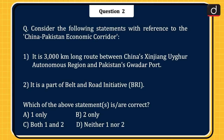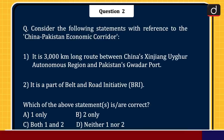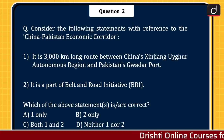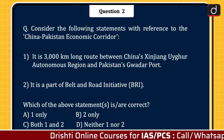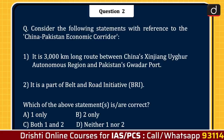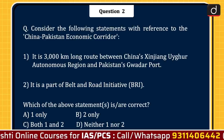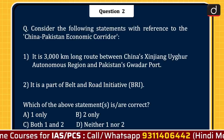Next question: consider the following statements with reference to the China-Pakistan Economic Corridor. Statement 1: It is a 3,000 km long route between China's Xinjiang Uighur Autonomous Region and Pakistan's Gwadar Port. Statement 2: It is a part of the Belt and Road Initiative (BRI). Which of the above statements is or are correct? 1 only, 2 only, both 1 and 2, or neither 1 nor 2? The correct answer is option C, both 1 and 2 — i.e., both statements are correct.